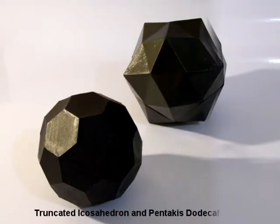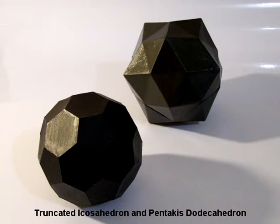And of course, the dual of the pentakis dodecahedron is the truncated icosahedron, which is the same shape as the recently discovered C60 carbon molecule.